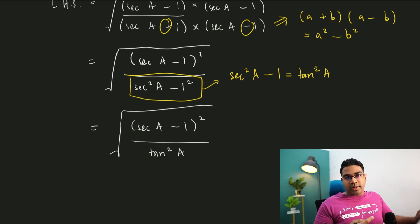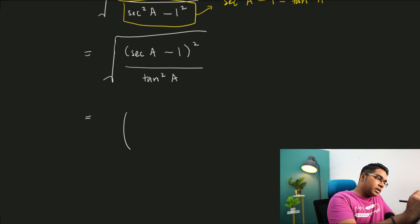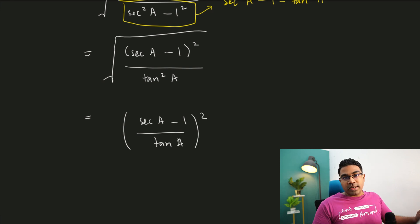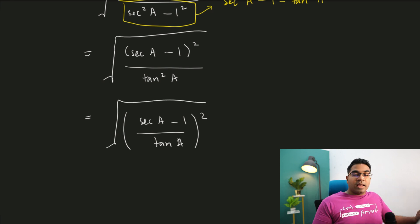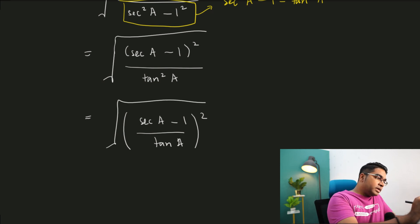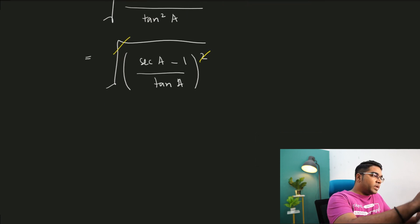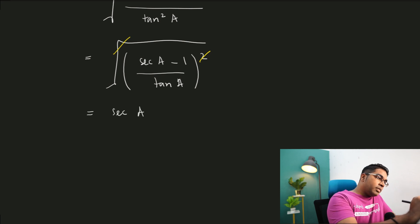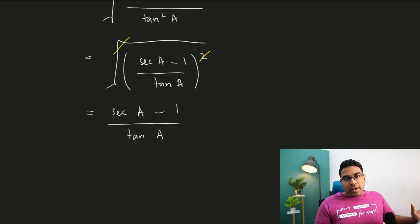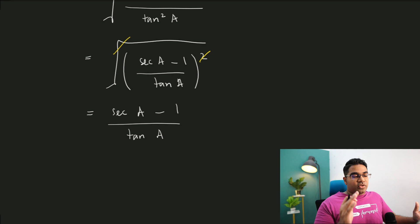Now we have squares in both numerator and denominator. According to the law of indices, we can take out the power, writing this as the square root of secant a minus 1 over tangent a, all squared. We have successfully eliminated the square root, leaving us with secant a minus 1 over tangent a. Now we can start working toward our final form.